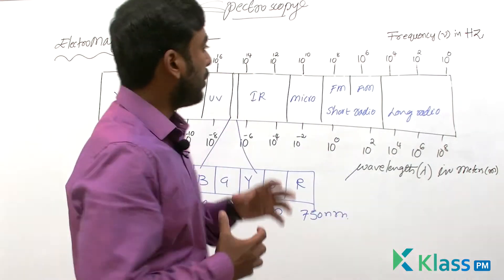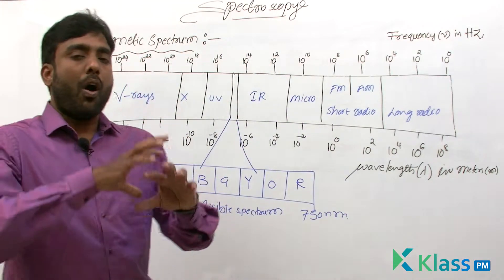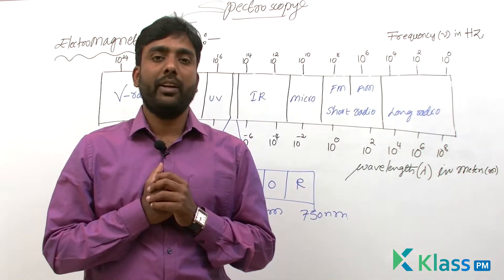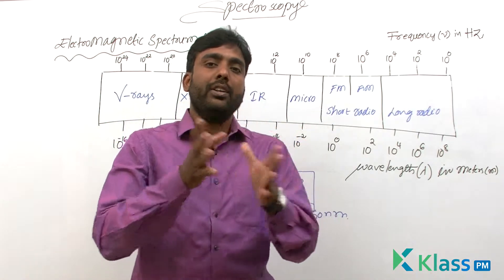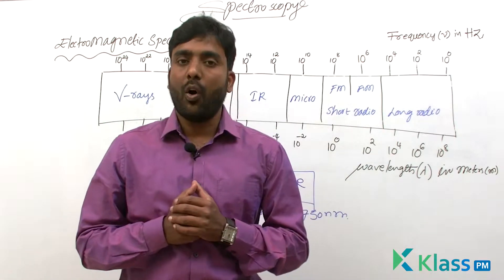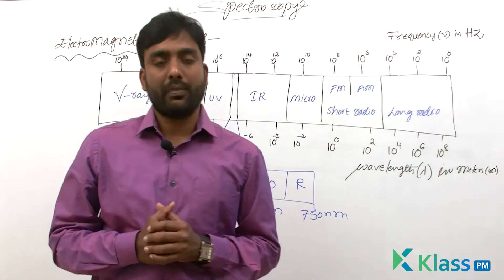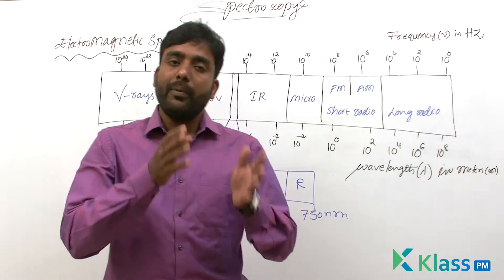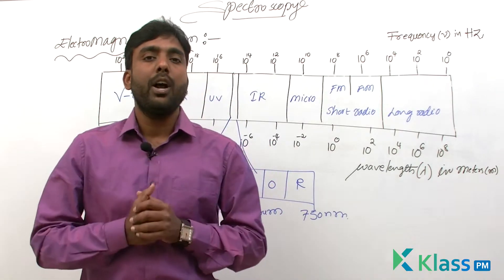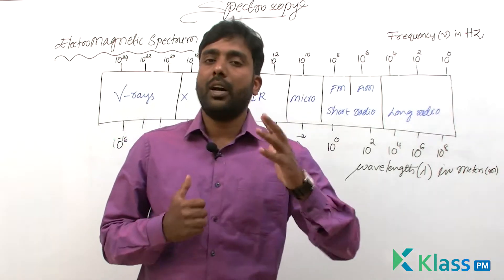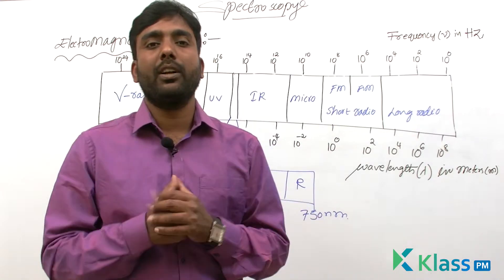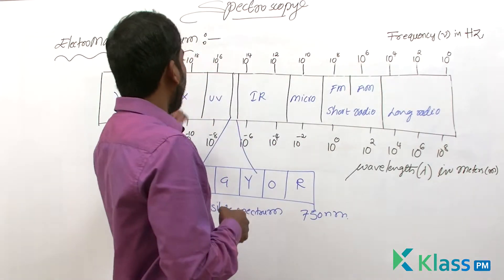Electromagnetic spectrum is nothing but all the existing electromagnetic radiation — if we arrange all types of electromagnetic radiations either in the increasing order of their wavelengths or decreasing order of their frequencies, that band, that arrangement is called electromagnetic spectrum.